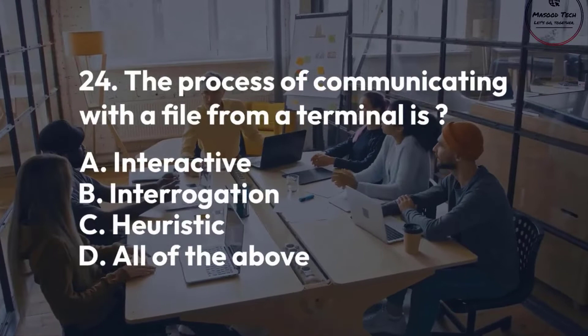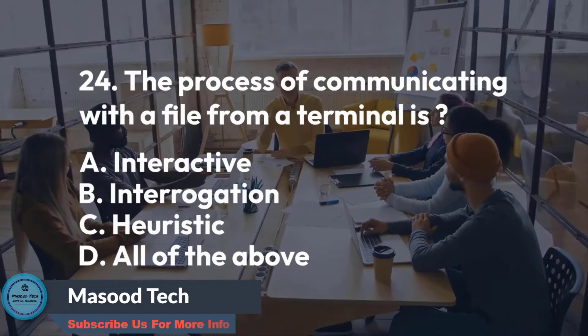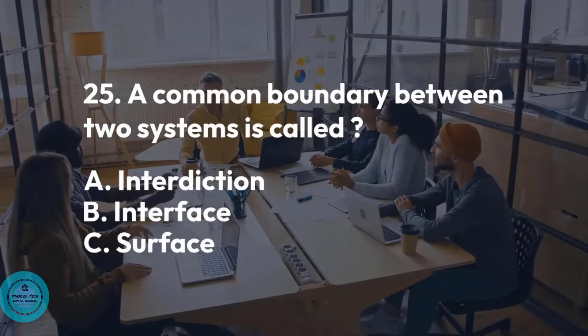Number 25. A common boundary between two systems is called: A. Interdiction. B. Interface. C. Surface. Correct answer is B.